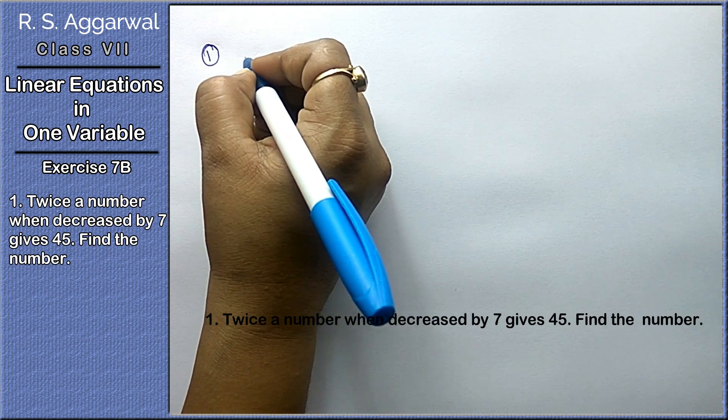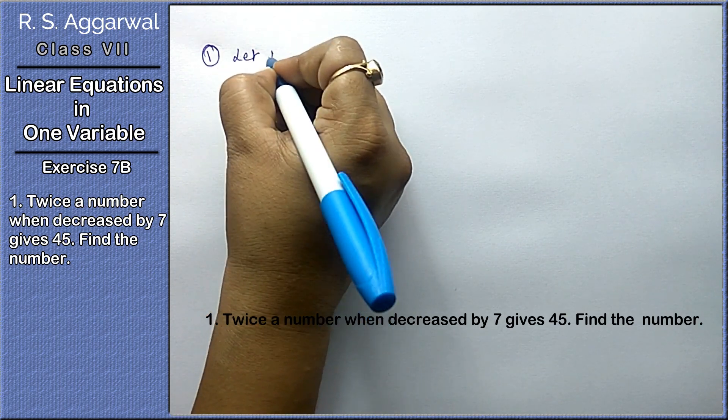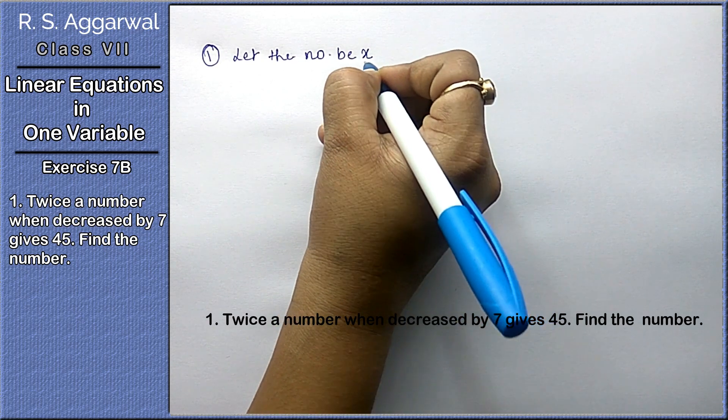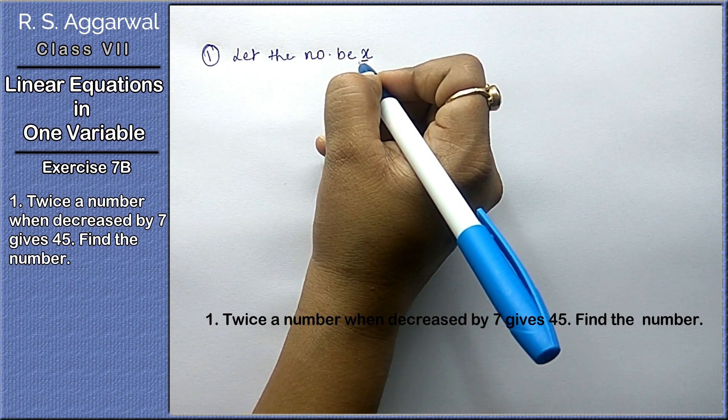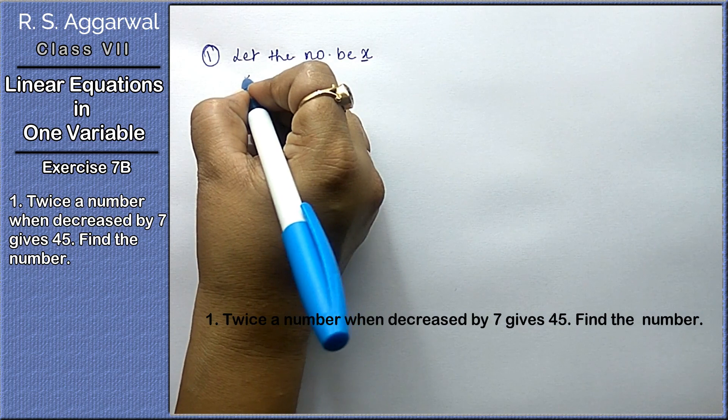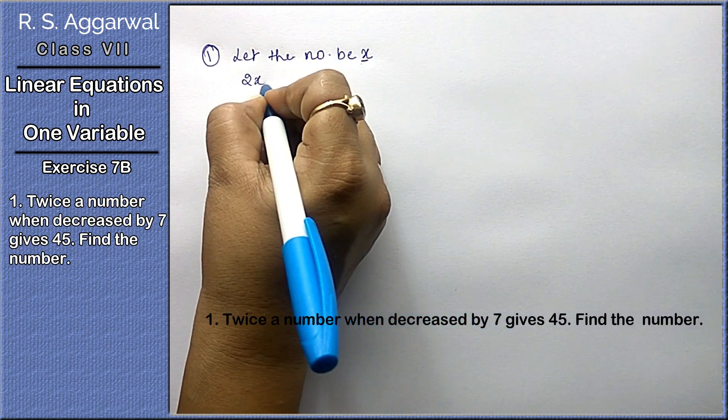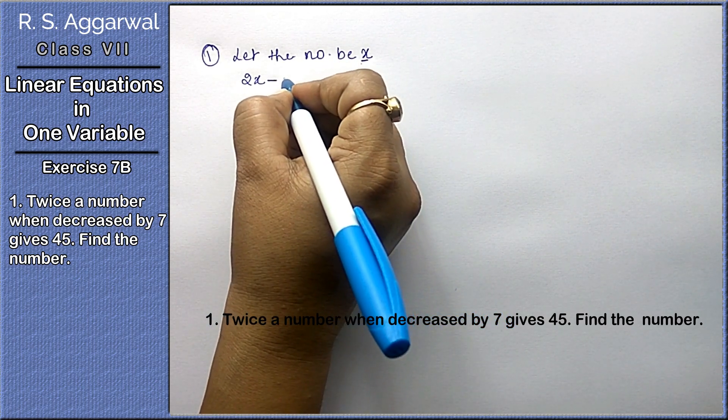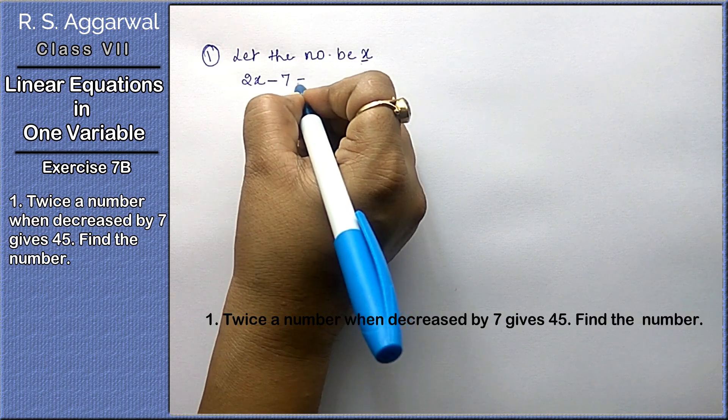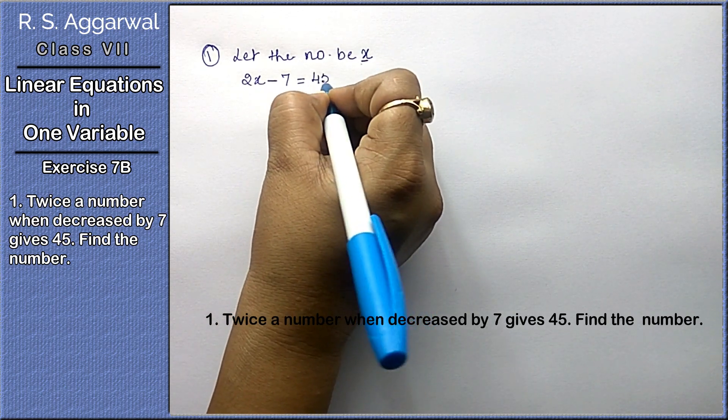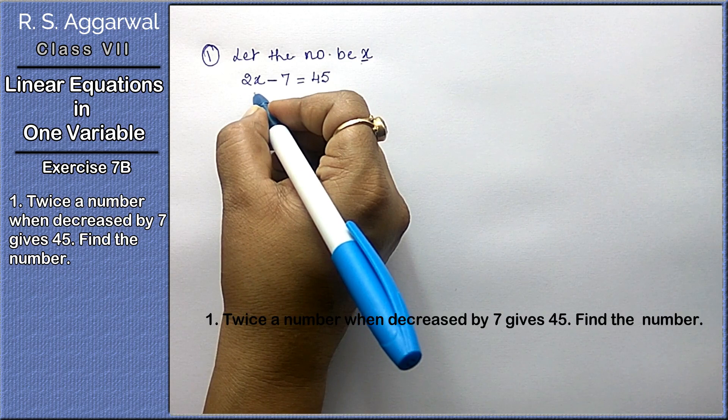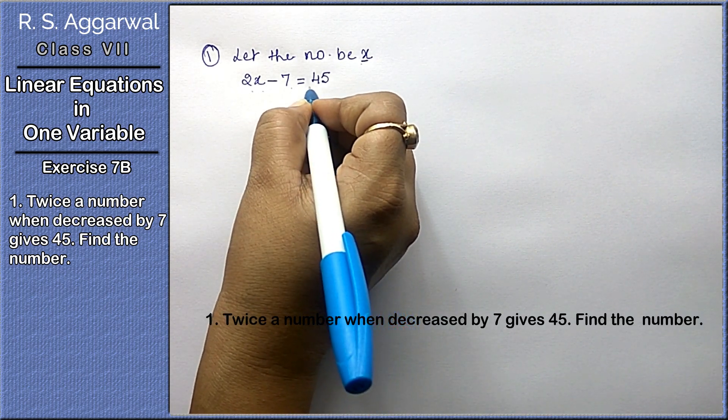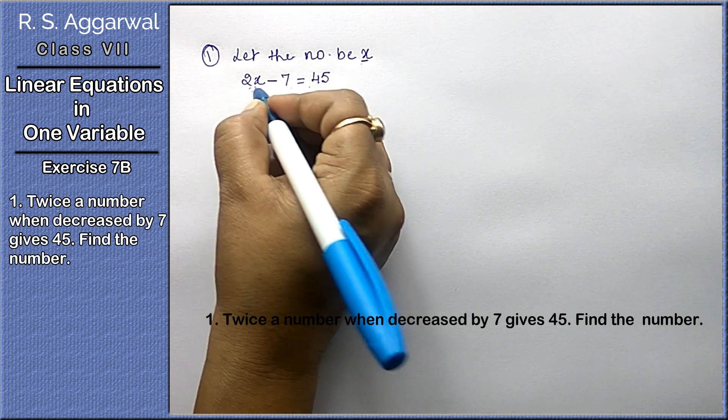When the number is not given, we have to let it be x. Let the number be x. Twice a number means 2x. When decreased means minus. Decreased by 7 means minus 7.